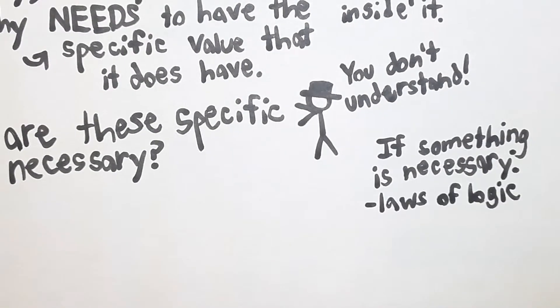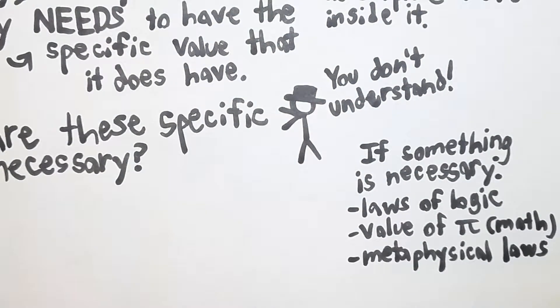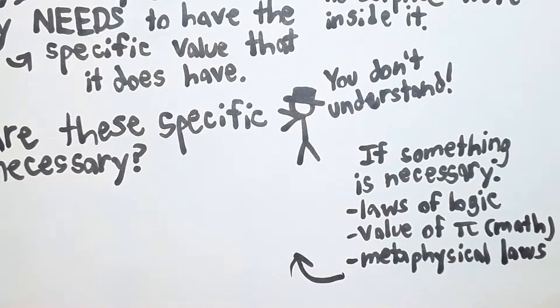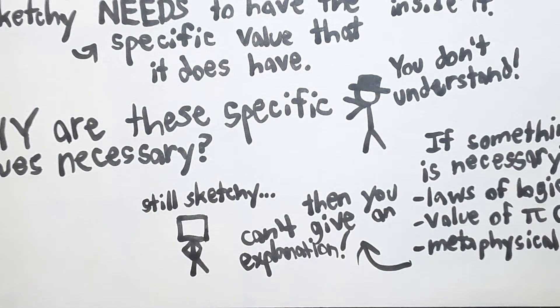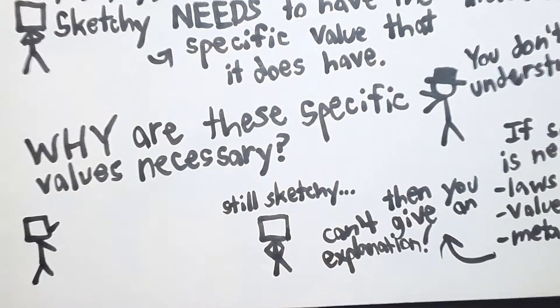The atheist would respond that I'm missing the point. If something is necessary, like the laws of logic and the value of pi or math more generally, or metaphysical laws, then you can't give an explanation for why they are the way they are, it's just necessary. I still think the argument seems a little sketchy, and I could demonstrate why with a thought experiment.